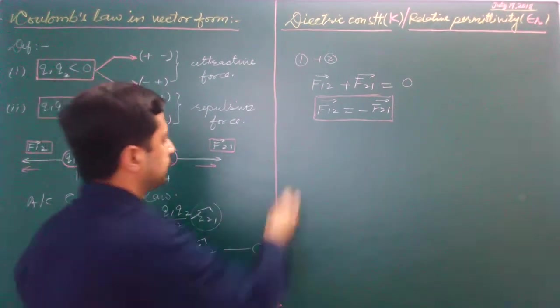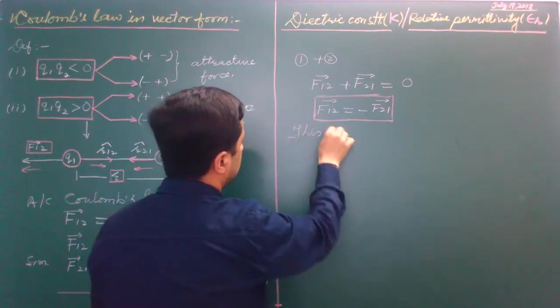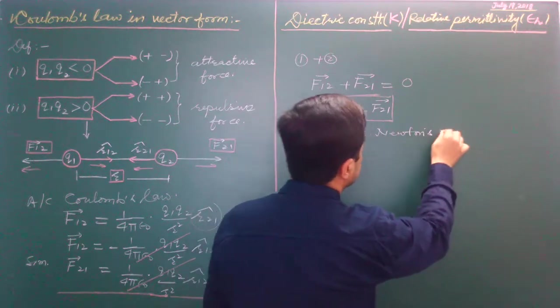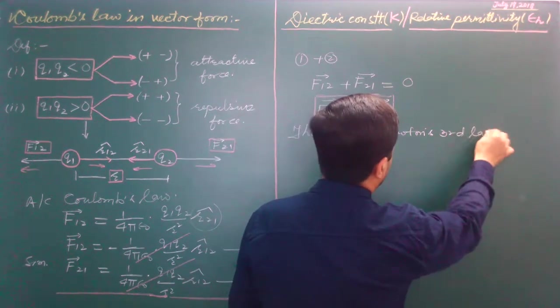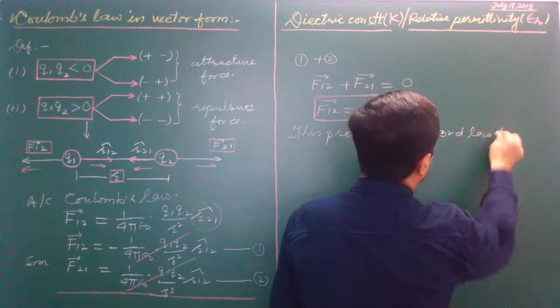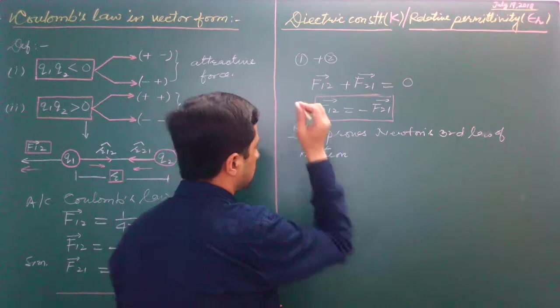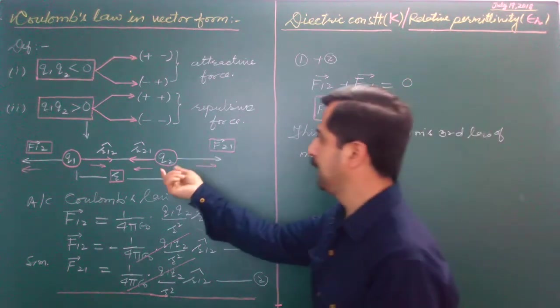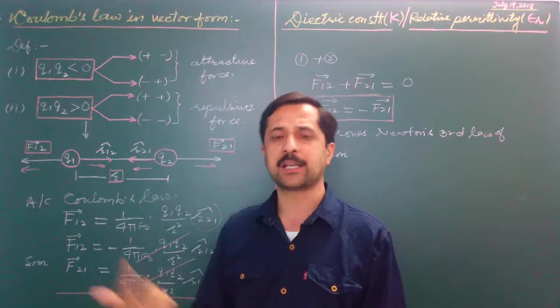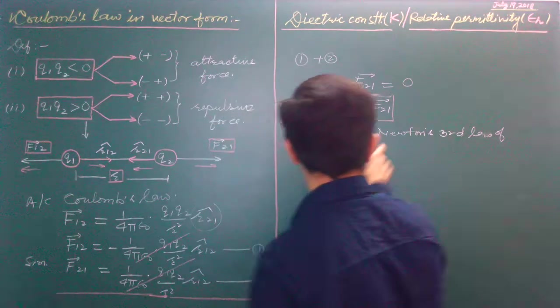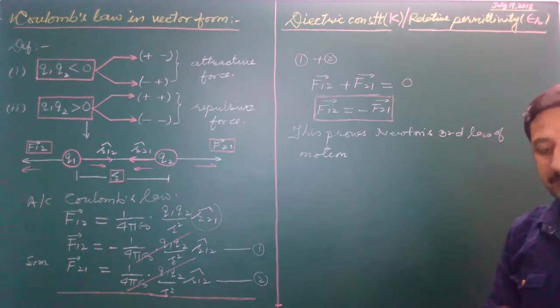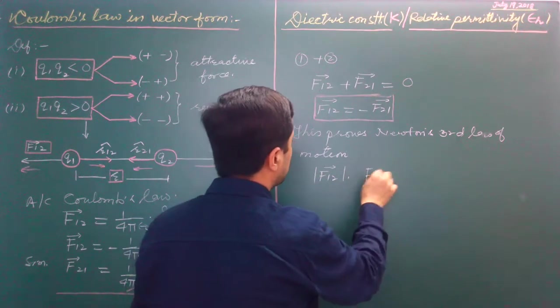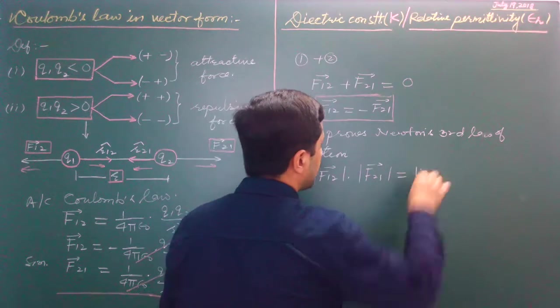This proves Newton's third law of motion. What is the ratio between forces exerted on each other by two charged particles? Both forces are equal in magnitude, therefore the ratio F12:F21 is equal to 1:1.